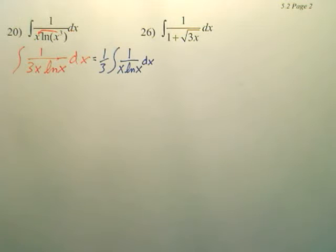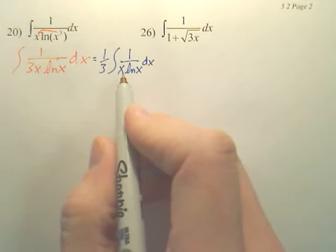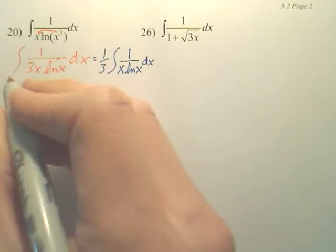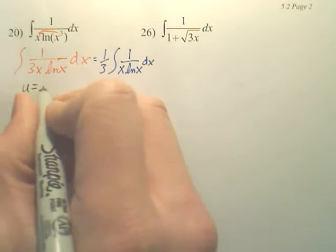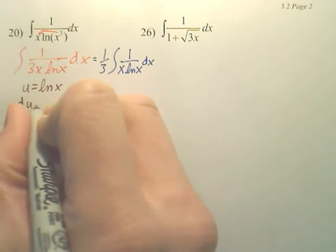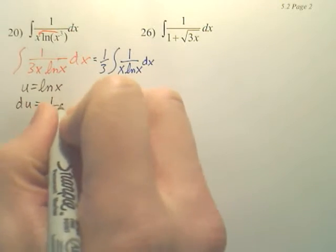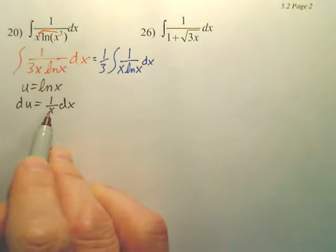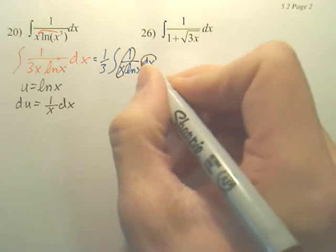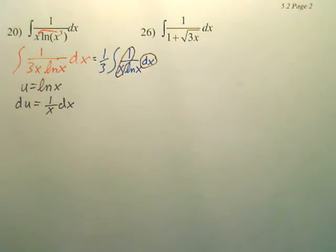Okay, next. That doesn't help me, except if I make this u, the derivative of that would be 1 over x dx. And 1 over x dx, isn't that right here? Don't you have 1 over x dx?